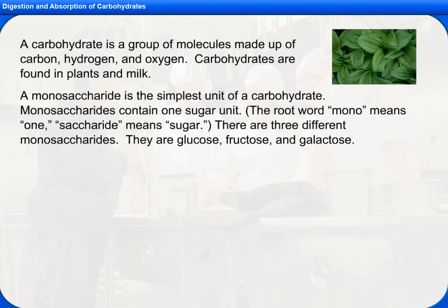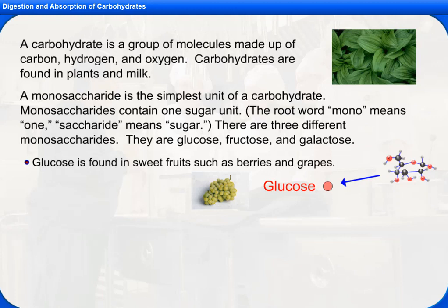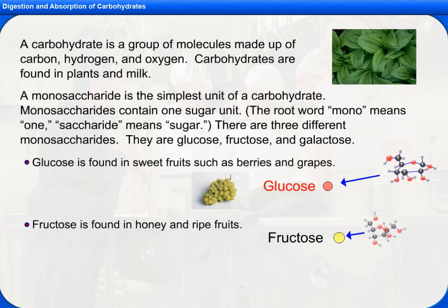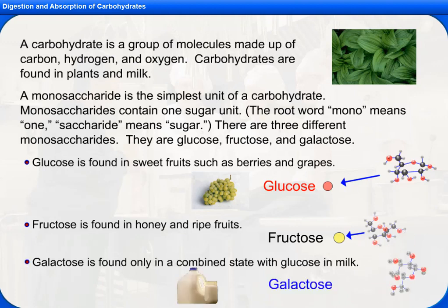There are three different monosaccharides: glucose, fructose, and galactose. Glucose is found in sweet fruits such as berries and grapes. Fructose is found in honey and ripe fruits. Galactose is found only in a combined state with glucose in milk.